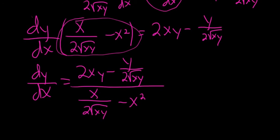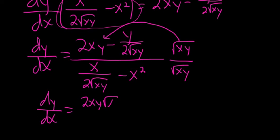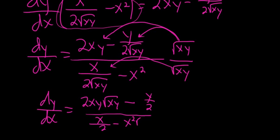And I guess we could clean this up if we want to. I'm going to multiply by the square root of xy over the square root of xy. This is optional. You don't have to do this. This is really multiplying by 1. So dy/dx, we're taking this and multiplying it by this. So we get 2xy square root xy minus, and look, here they cancel. That was the whole point. So we get y over 2. Over, then here we do the same thing. So we get x over 2 minus x squared square root xy. And if you want it to be even fancier, you could multiply by 2 over 2. But I'm going to stop here.